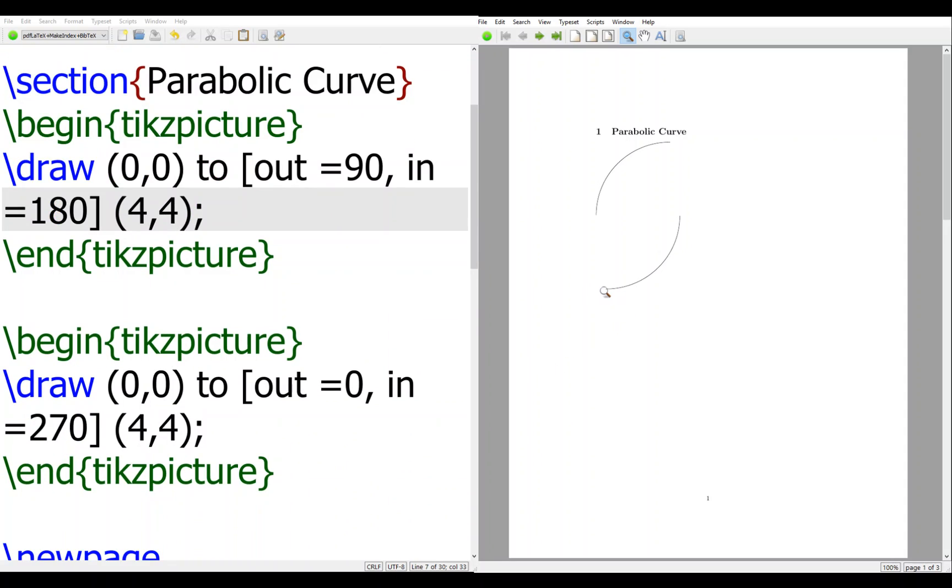And the second one is, out is 0. And when you get in is 270. So that's why that's how this parabolic curve looks like. So it's a rather standard to draw and calibrate.